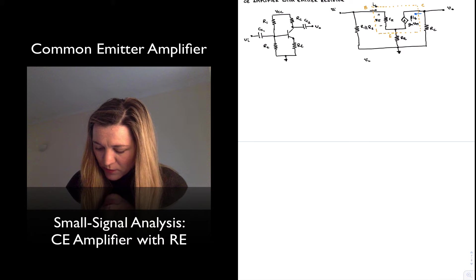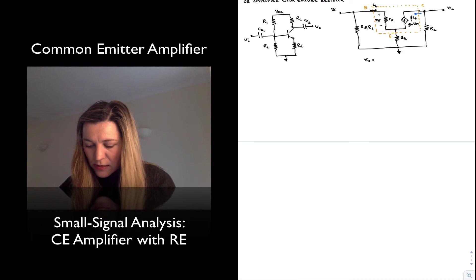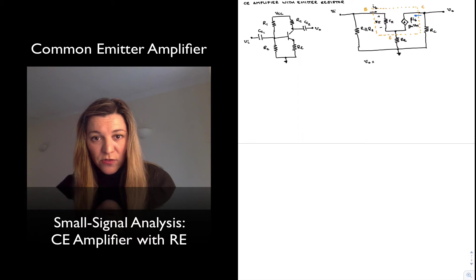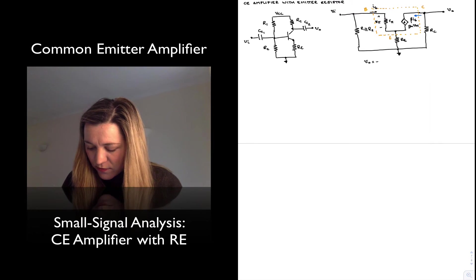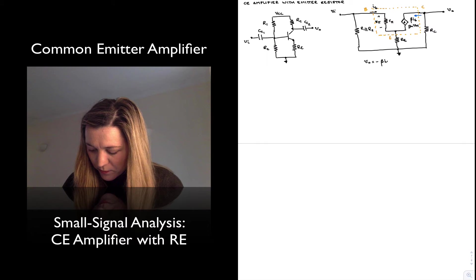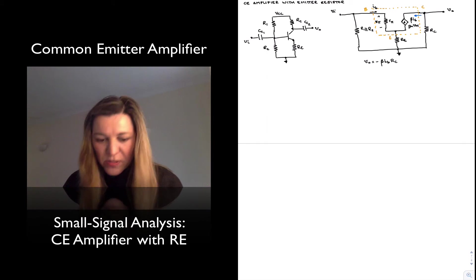my V_out expression there as, and again since the current is flowing from ground towards V_out, the voltage V_out will be negative, so negative beta times I_B times R_C.